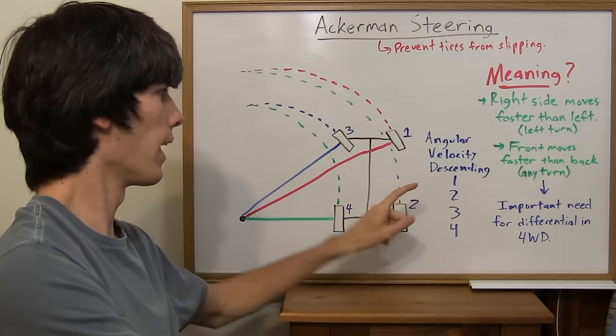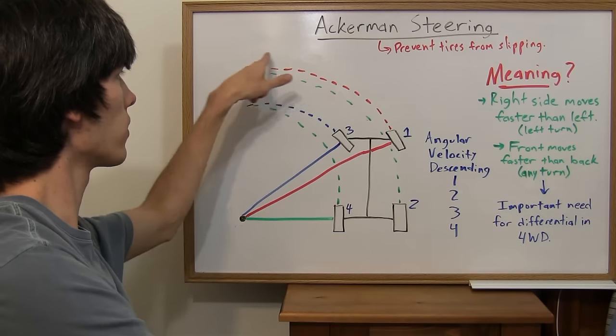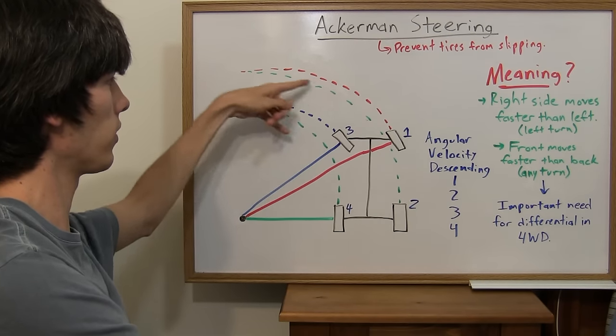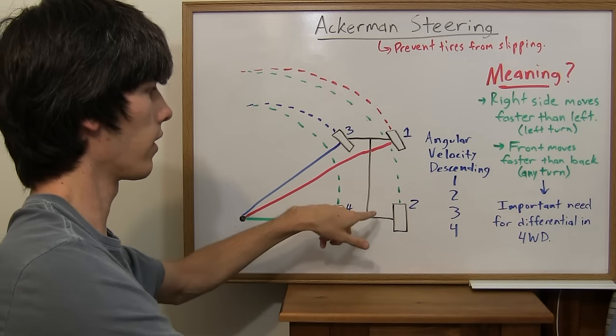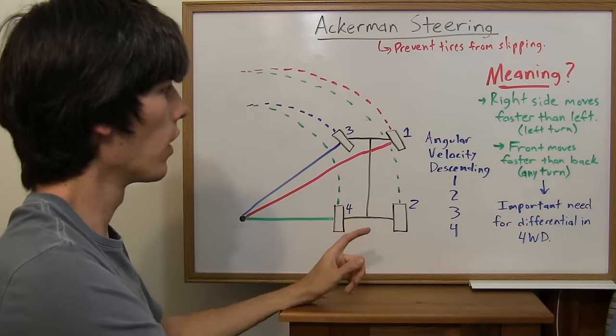Also, what this means is that the front tires, because they're traveling a greater distance than the rear tires, are moving faster than the rear tires when you turn.